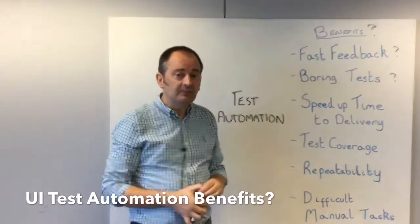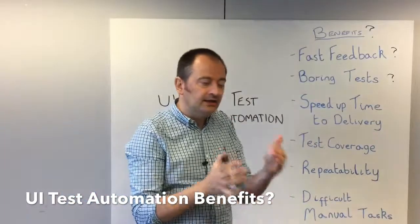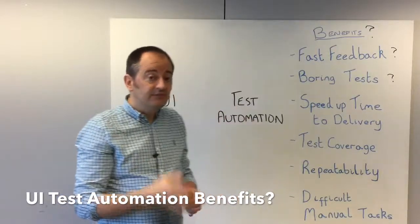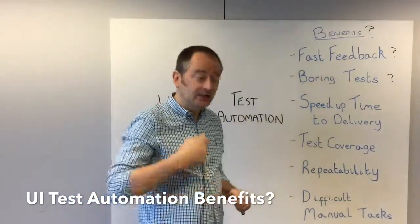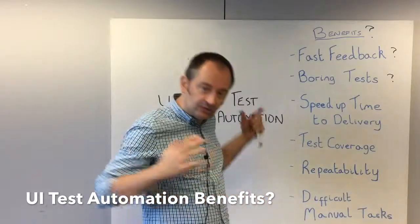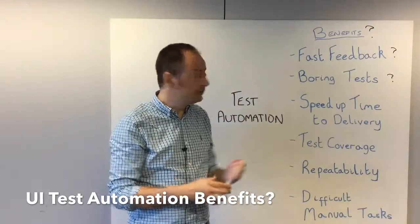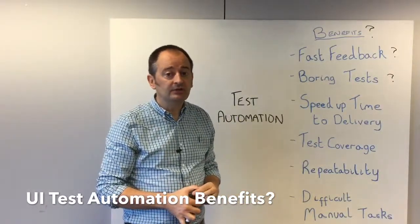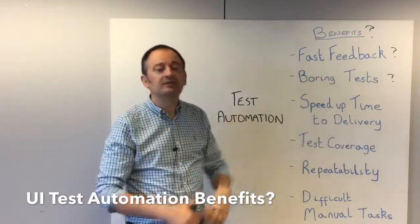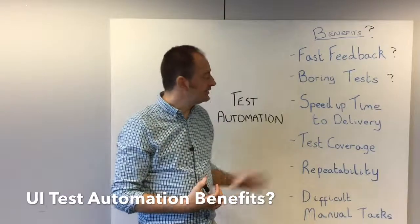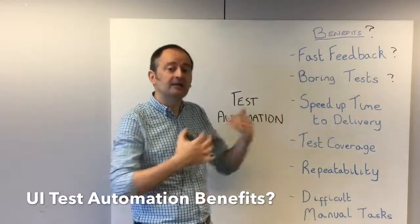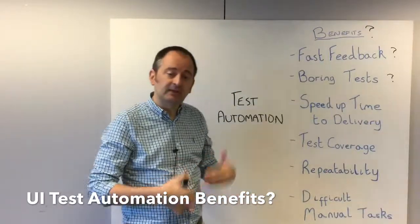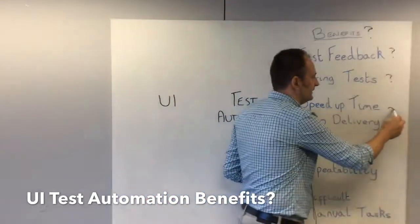Speeding up time to delivery: running an automated test is very often going to be a lot quicker than executing a manual test, which can reduce delivery time. However, the time to actually create the tests, manage them, maintain them, and handle everything peripheral to creating those automated tests may actually take longer. Ironically, we could end up taking more time to deliver because we spend so much time on automation at the UI level.